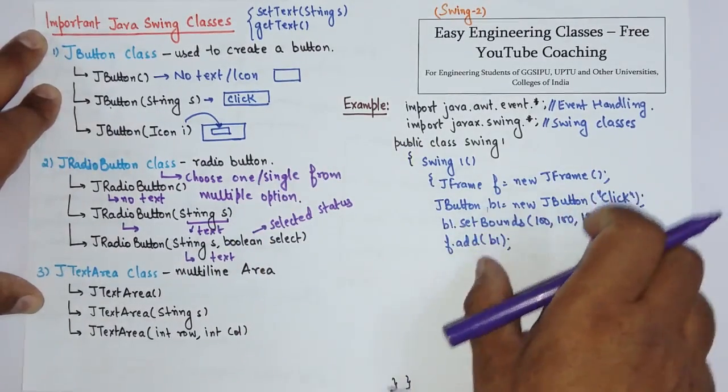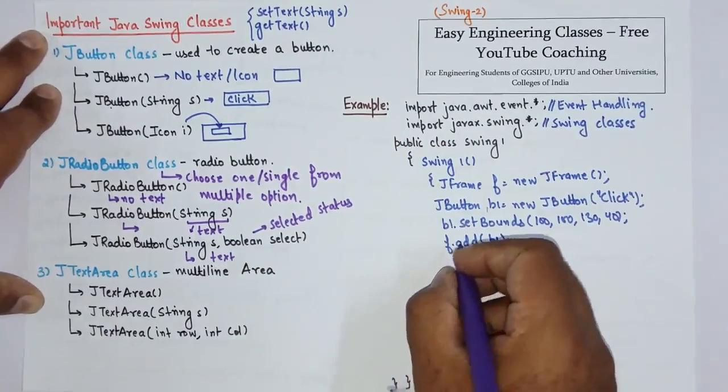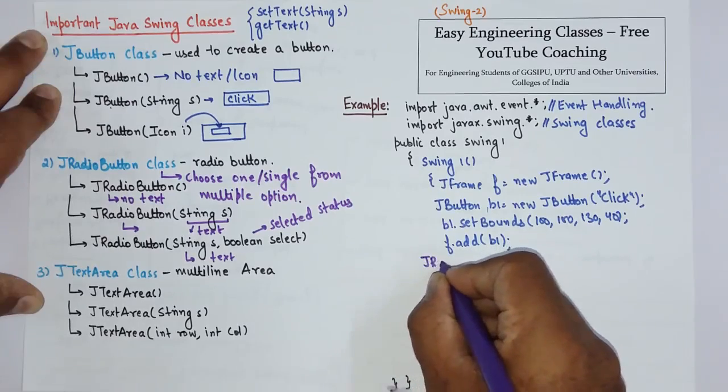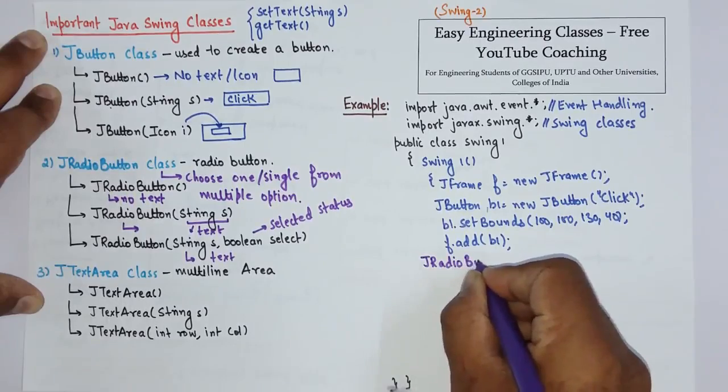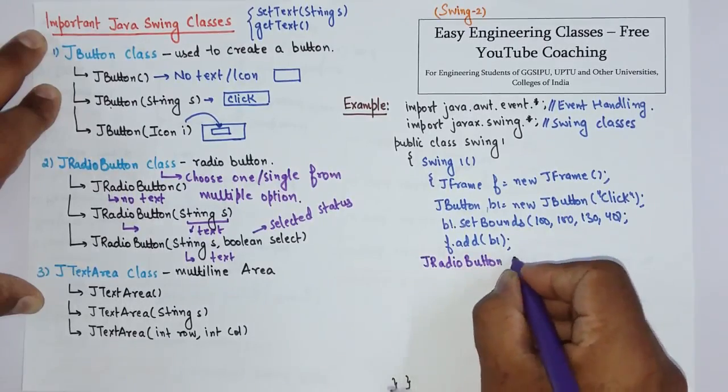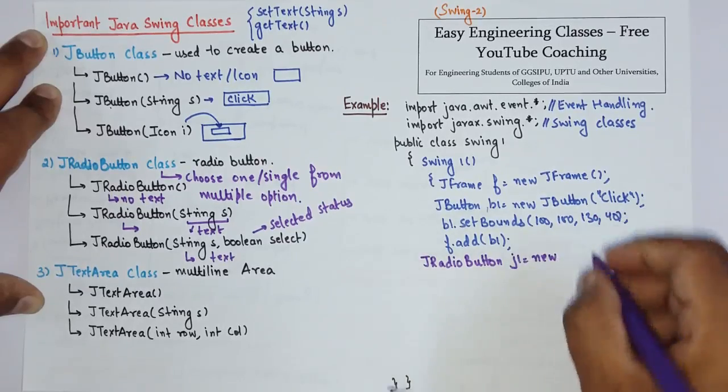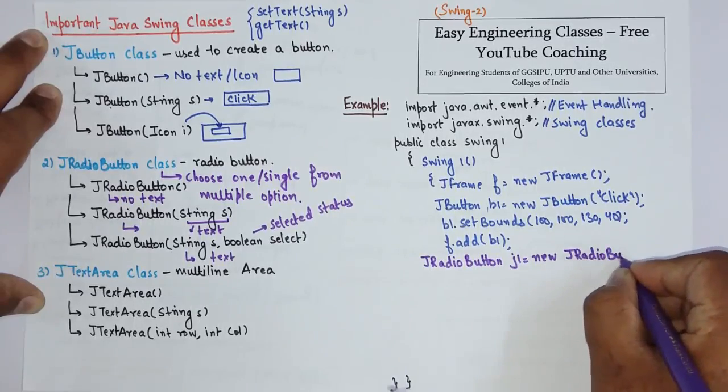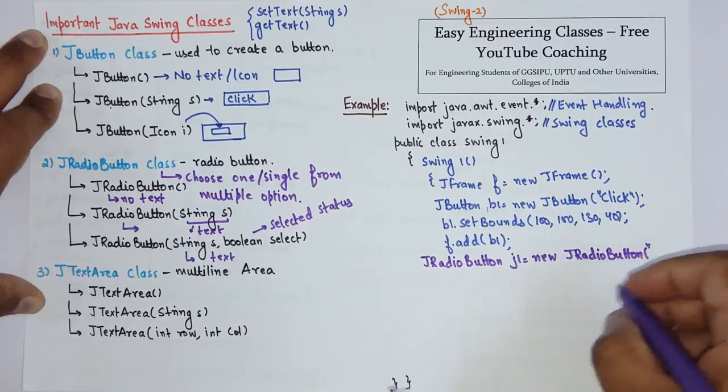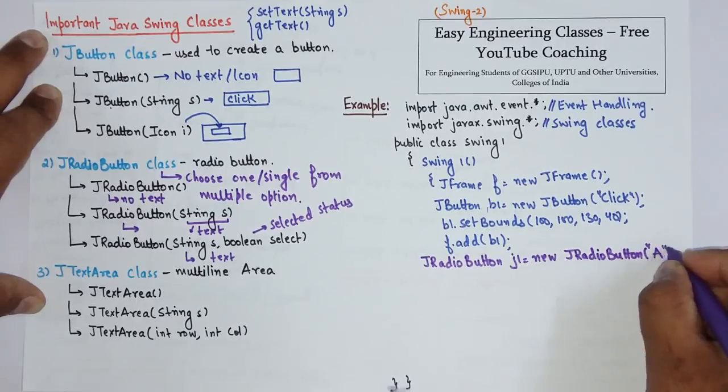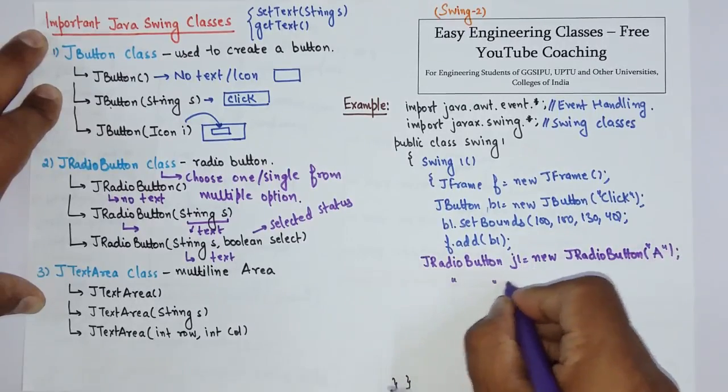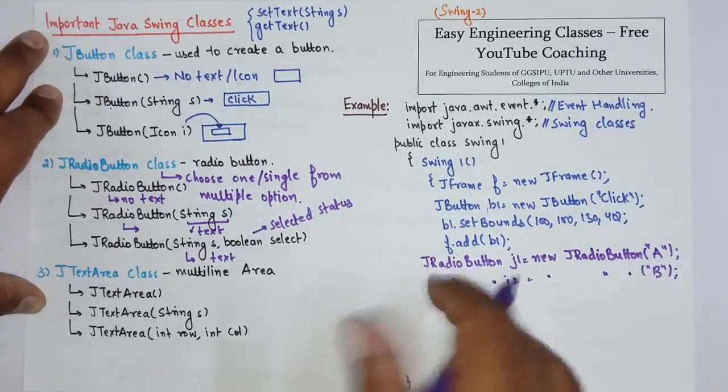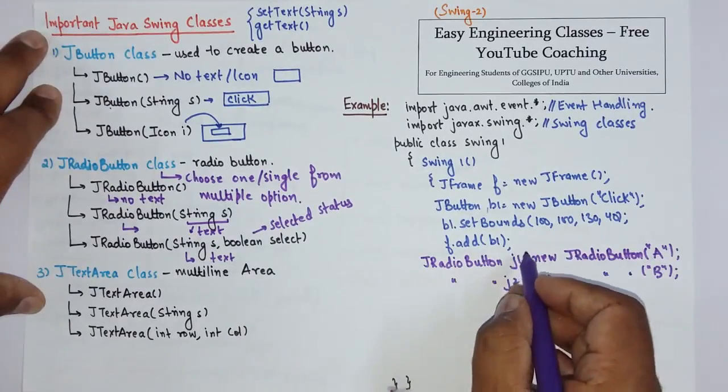So now let's see how to create JRadioButton. For example, I am creating two different radio buttons. So create object of JRadioButton and the option that I am giving is A. Similarly for J2, B. So I have created two radio buttons J1 and J2.